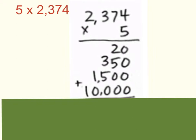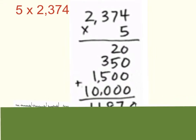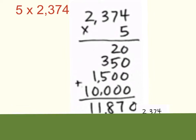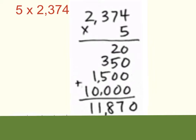We start out in the ones place and 0 plus 0 plus 0 plus 0 gives me 0. Next we move to our tens place — 2 plus 5 gives me a sum of 7. Then we move to our hundreds place — 3 plus 5 gives me a sum of 8. Then our thousands place: 1. And our ten thousands place: 1. So our final product is 11,870.